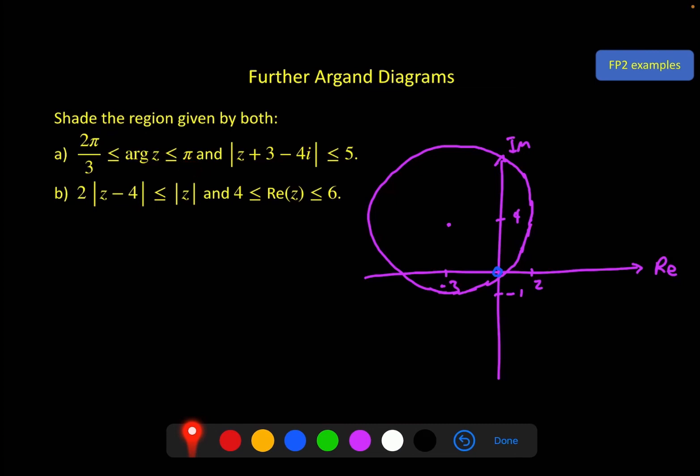2 pi by 3 is about here. It doesn't need to be particularly accurate on my diagram, because of course I can just put the angle on here. And I know with this one, it's between these two lines. And with the circle, it must be less than 5 units away. So it's inside the circle between these two lines. So the region that I want is this part here.